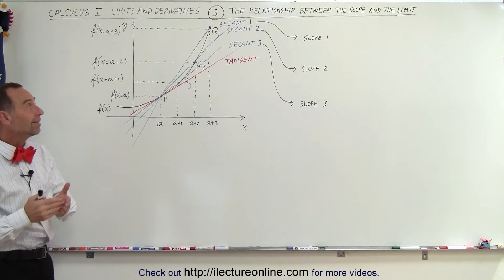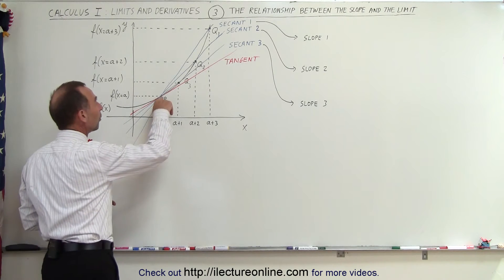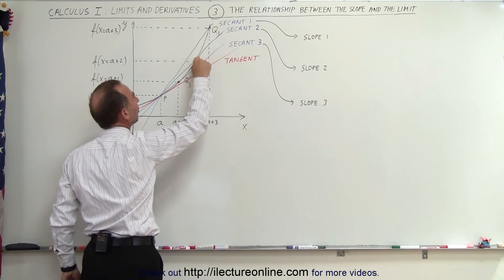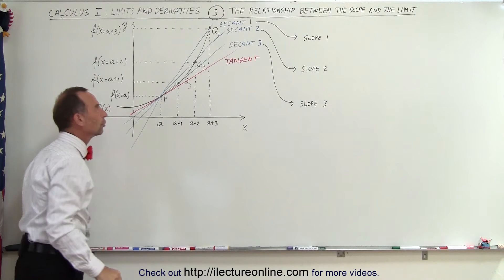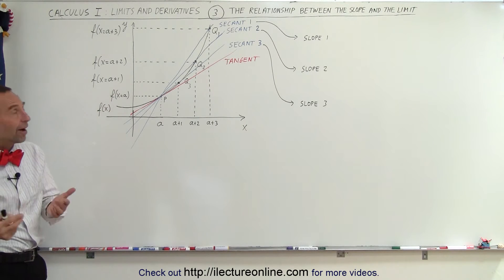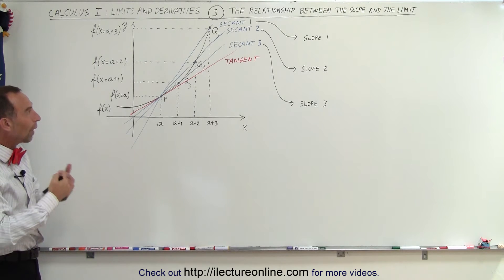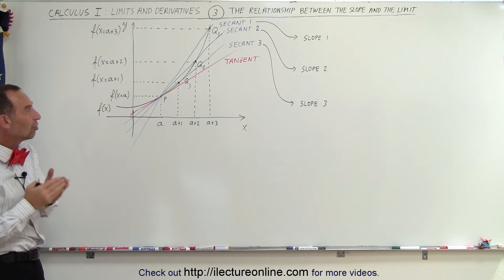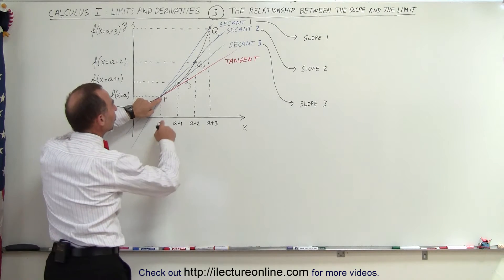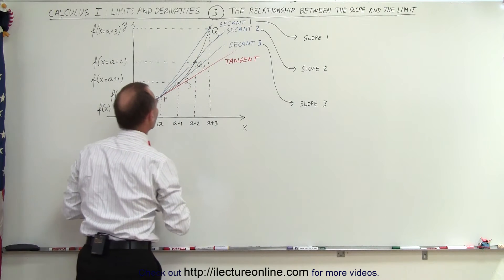We've also drawn three secant lines. Each of those three secant lines all go through point P and some other point on the function — here it's point Q1, point Q2, and point Q3. The slope of each of the secant lines is defined by the change in the y-distance, or the rise, divided by the change in the run, when we go from point P to points Q1, Q2, and Q3.